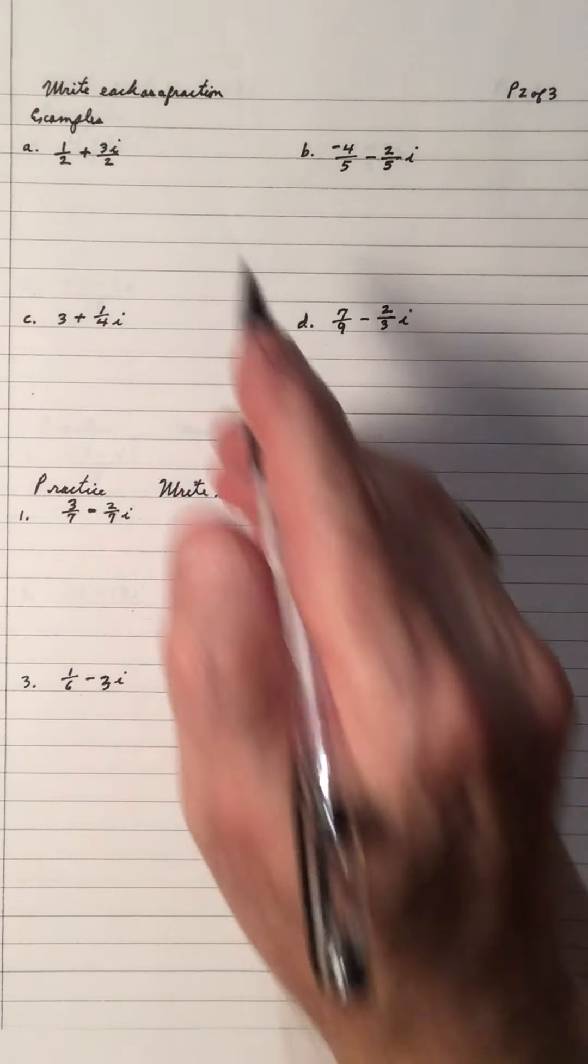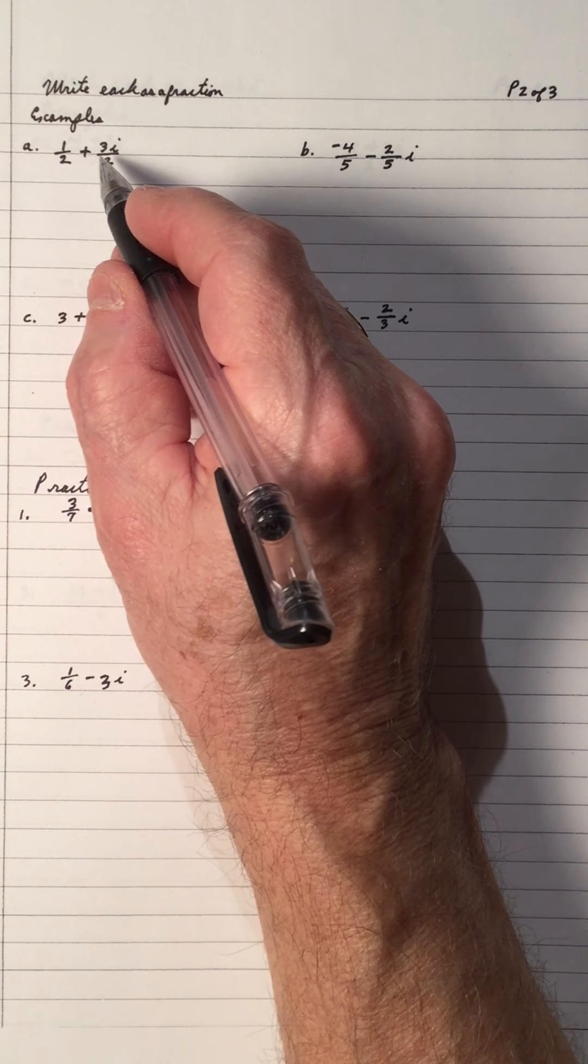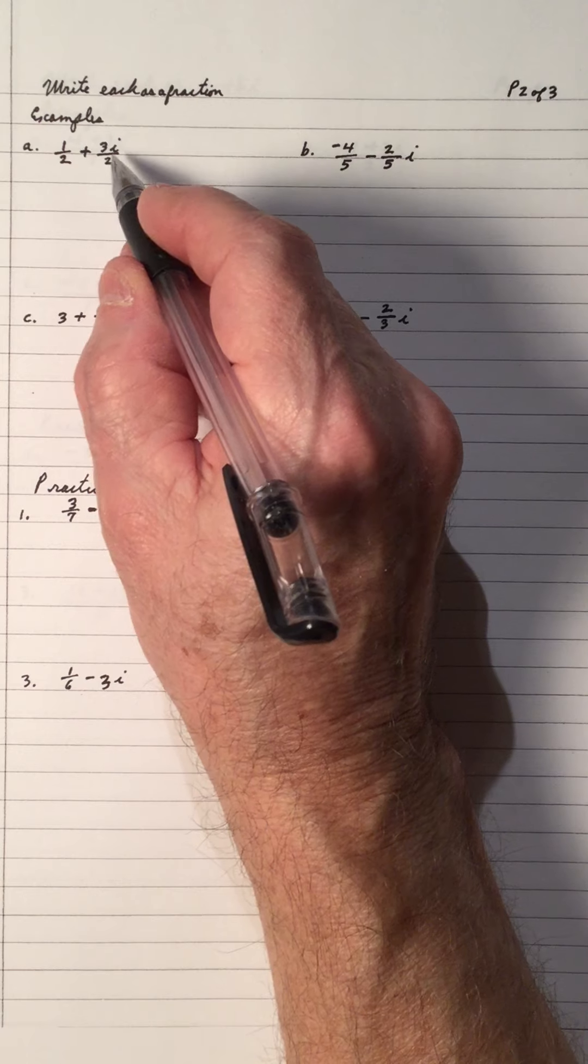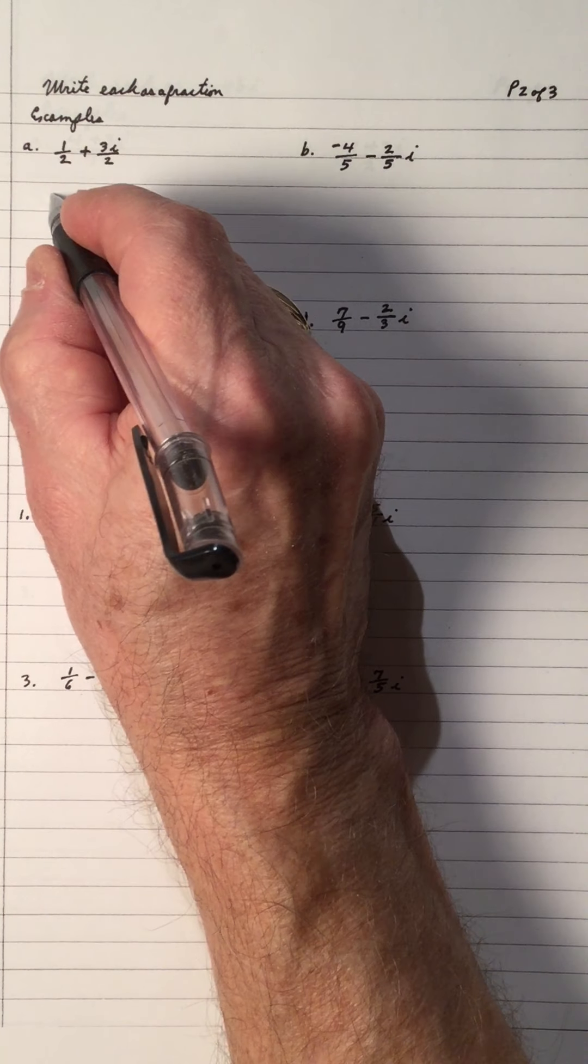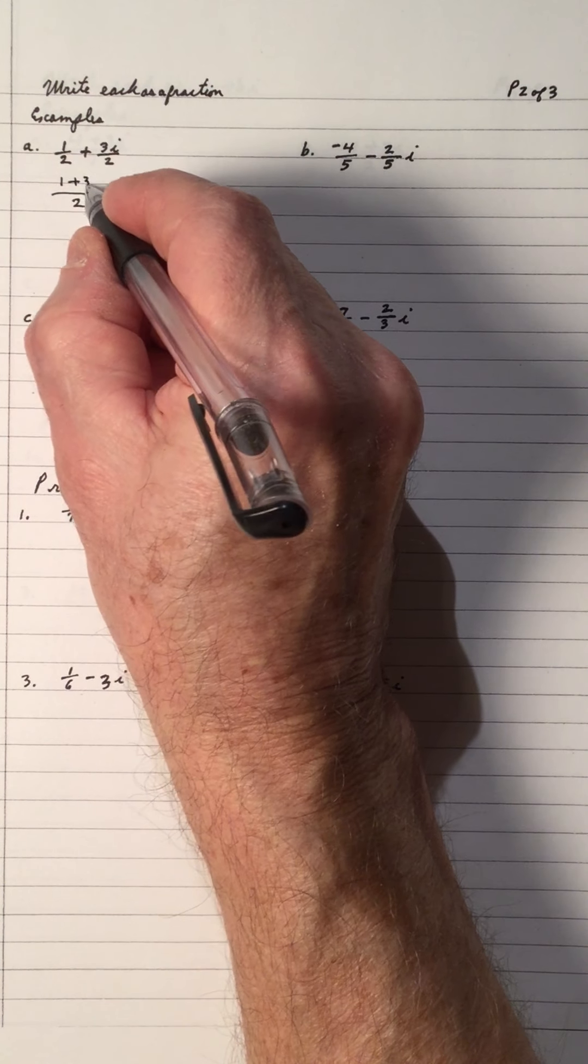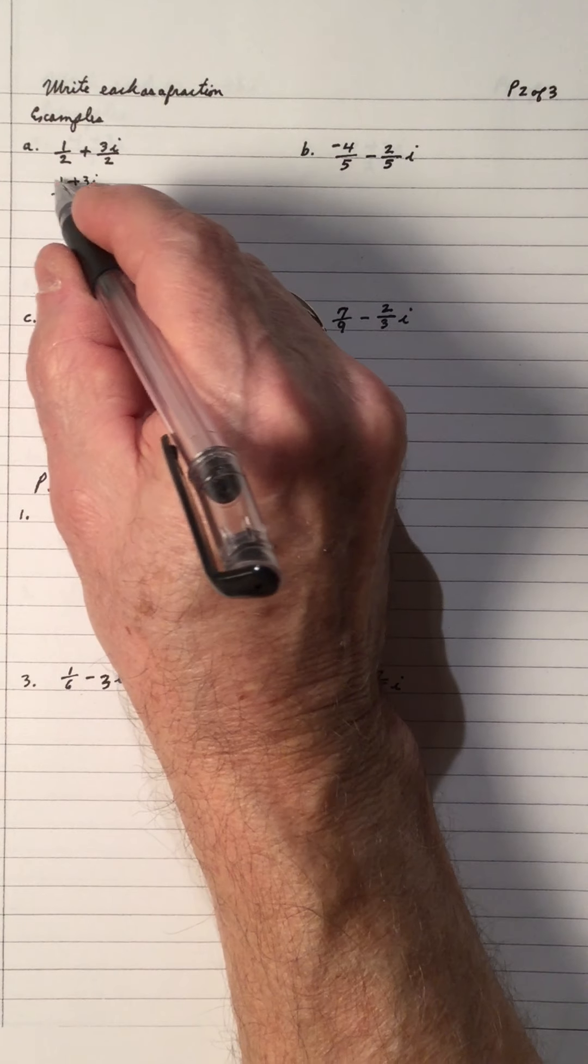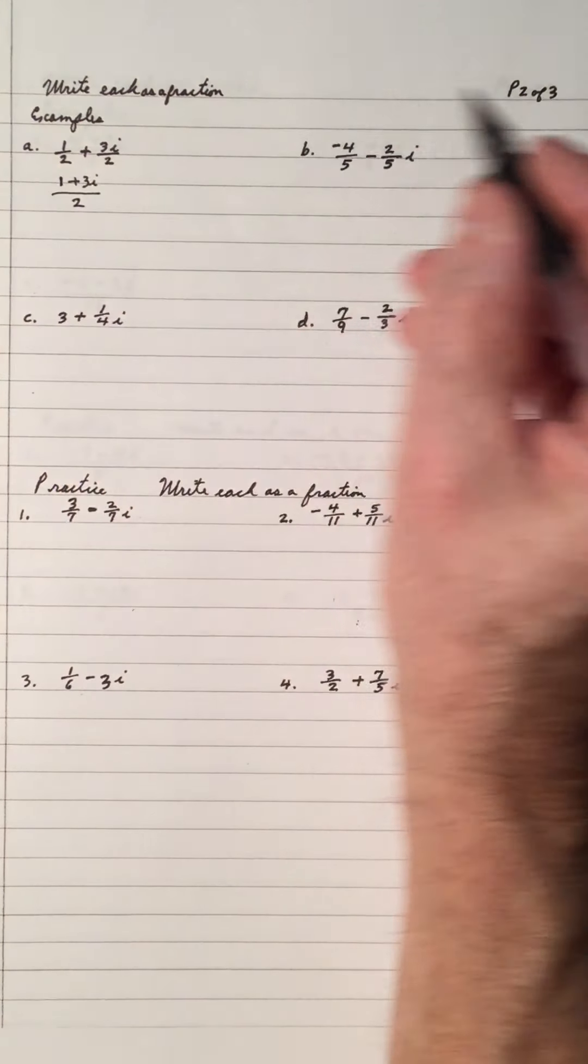Write each as a fraction. Examples: 1 half plus 3i over 2. The common denominator is 2, so we keep the denominator and we go 1 plus 3i. And we cannot add these because they're not like terms. That's a real number and that's an imaginary.